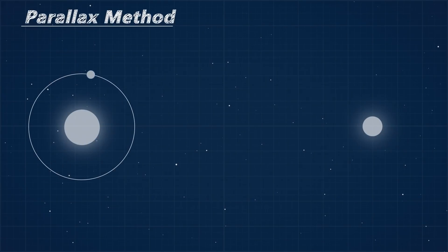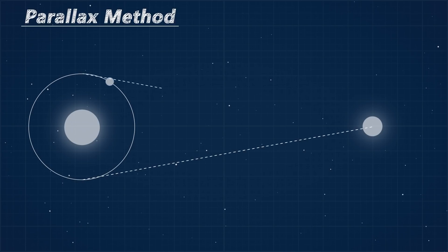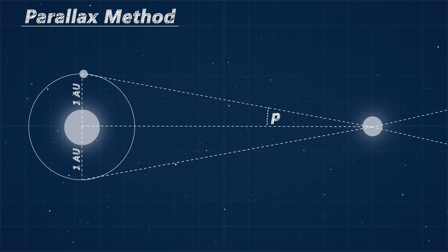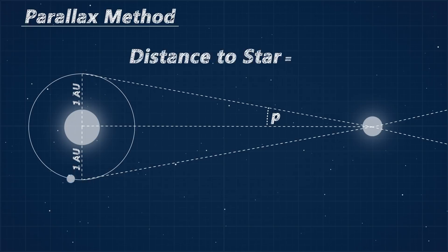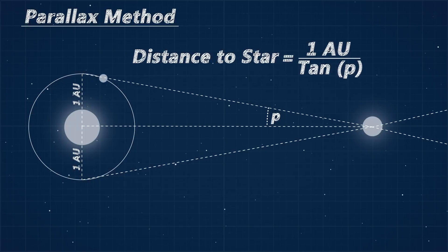This is called the parallax method and we can use it to measure the distance to the star. But instead of closing our eyes and staring at the sky, we can take measurements of the planet's position from opposite sides of our orbit around the sun. We know the distance between these two points and we can measure the change in the star's position relative to the distance stars behind it giving us the parallax angle. Thus we have all the information we need to calculate the distance to the star using some simple trigonometry.